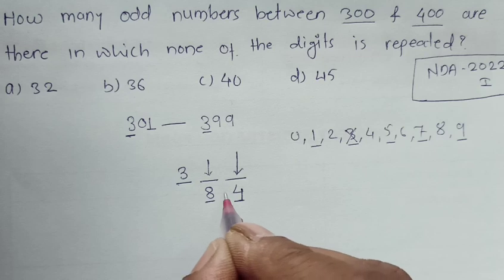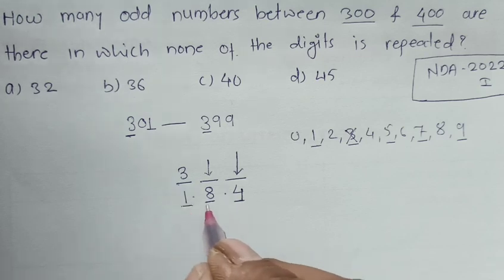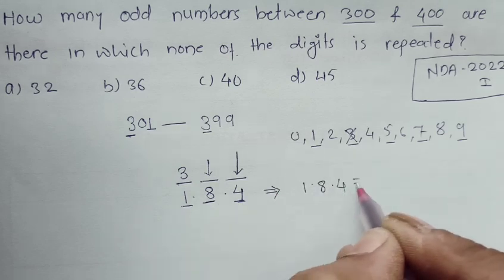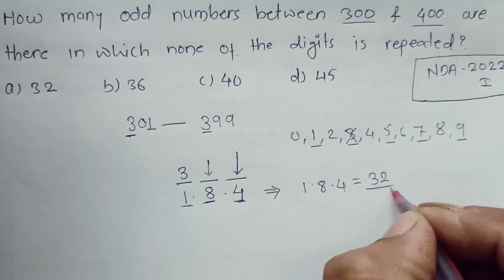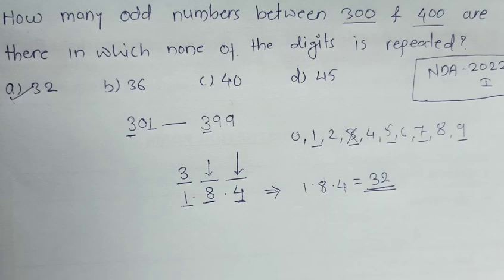At this place I have only four options, and here I have only one option. So 1 × 8 × 4 is my answer, which equals 32. So there are a total of 32 odd numbers between 300 and 400. Thank you.